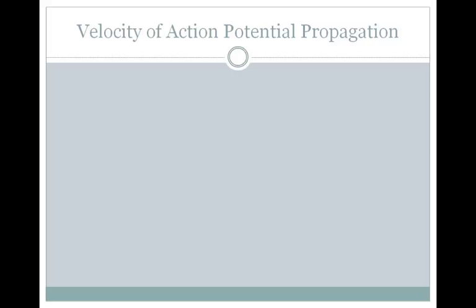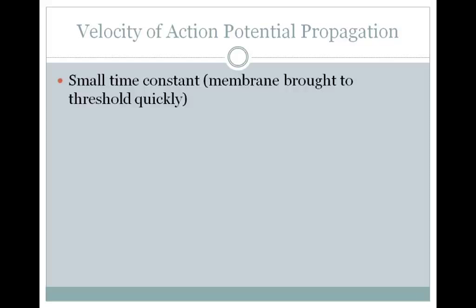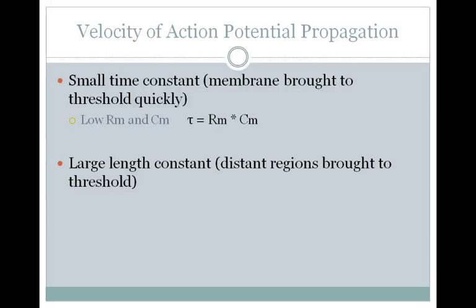You can calculate the velocity of action potential propagation by putting together these two time constants. If you want a fast velocity of action potential propagation, you'll want a small time constant. This will mean that you'll bring your membrane to threshold very quickly. To get a small tau, you'll want to have a low membrane resistance and/or membrane capacitance.